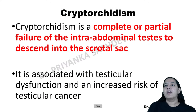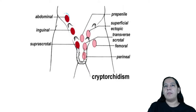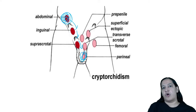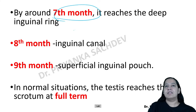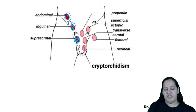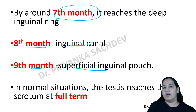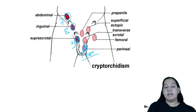Cryptorchidism is the failure of descent of the testes. During embryonal development, the testes form intra-abdominally. During the 9-month gestational period: at 7 months the testis reaches the deep inguinal ring, at 8 months it reaches the inguinal canal, at 9 months it reaches the superficial inguinal pouch, and just before birth it descends into the scrotum. The descent is guided by the gubernaculum.